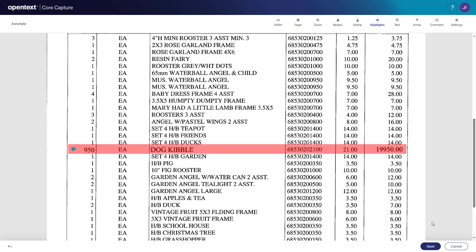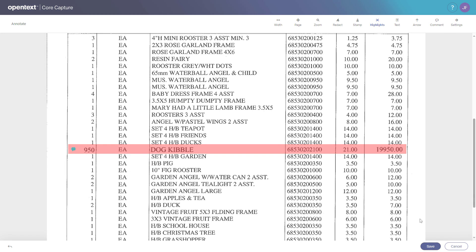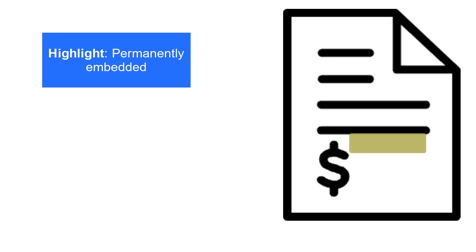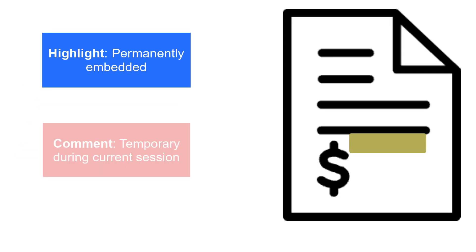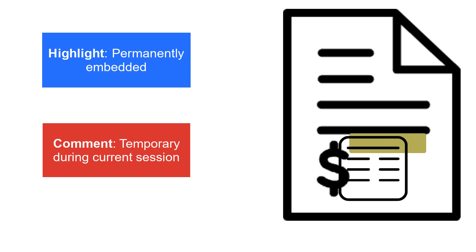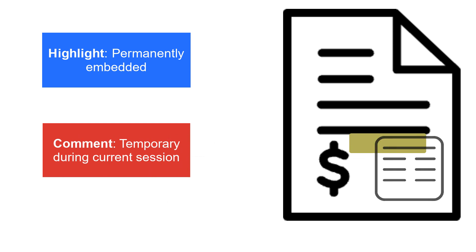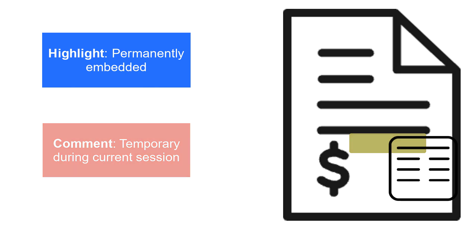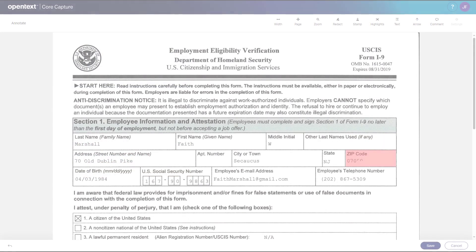Only the user who adds an annotation can modify or delete it. When you submit a batch, the highlight you added to the document becomes permanently embedded or burned in. The comment, however, does not become permanent and is active only during your review session.